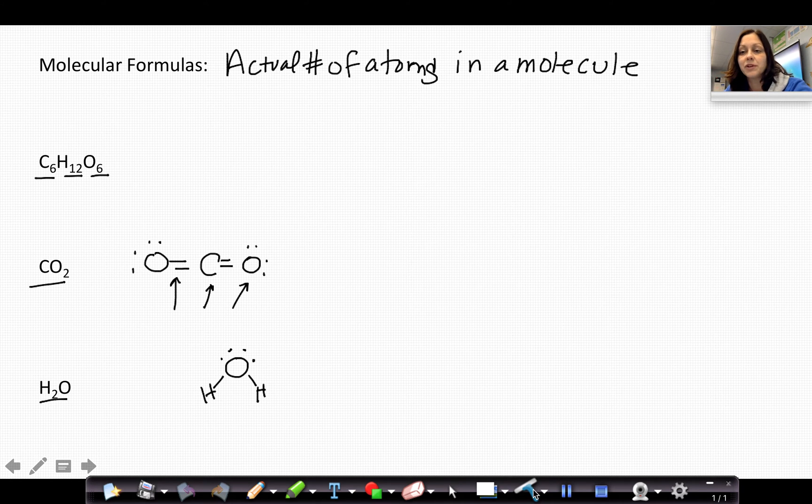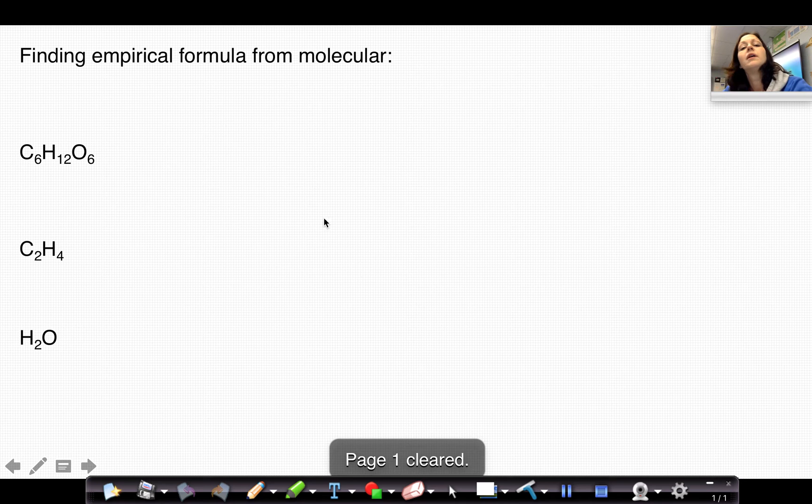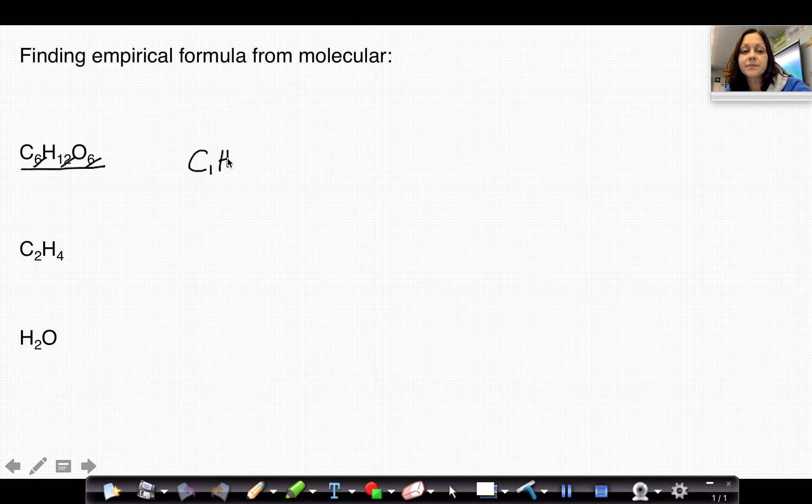When we're finding the empirical formula from the molecular formula, all we have to do is look and see if the subscripts can be reduced. So again, a six, a 12, and a six can all be divided by six, so the empirical formula would be CH2O, because remember the ones don't need to be written.